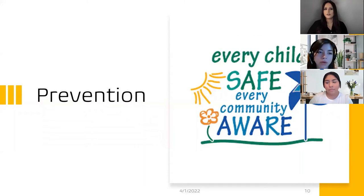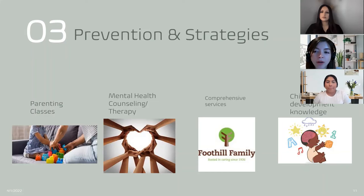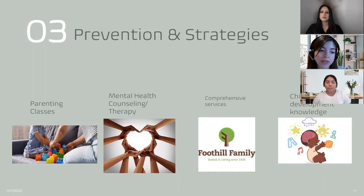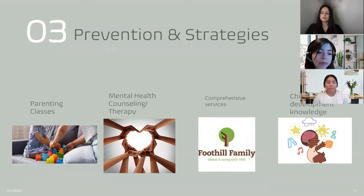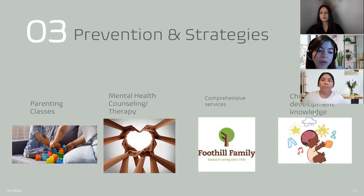In the following slide, we will discuss four different ways to prevent child abuse. Child abuse is underreported, and we must all have a consistent understanding of what child abuse is. It can be prevented before it even begins. We can provide parenting classes, mental health counseling, comprehensive services, and child developmental knowledge. Promoting safe, stable, nurturing relationships is important for child development — through home visitation programs such as Welcome Baby, HFA, and Early Head Start. Strategies include strengthening economic support to families, changing social norms to support parents and positive parenting, providing quality care and early education, and promoting healthy child development and parenting skills.